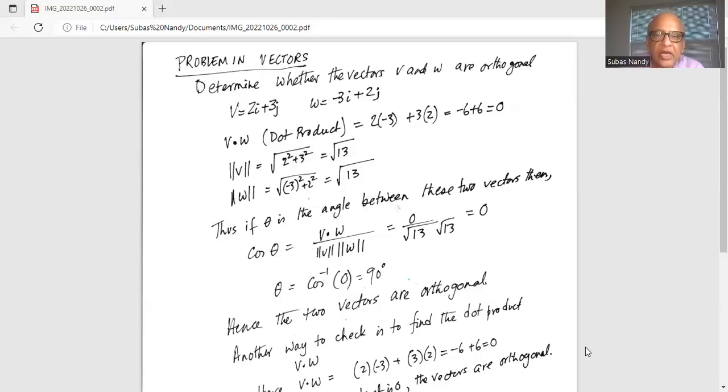Thus if theta is the angle between these two vectors, then cosine of theta is the dot product v dot w divided by magnitude of v times magnitude of w, which is 0 divided by square root of 13 times square root of 13, which is 0. So theta is cosine inverse 0 or arc cosine 0. Hence the angle theta is 90 degrees.